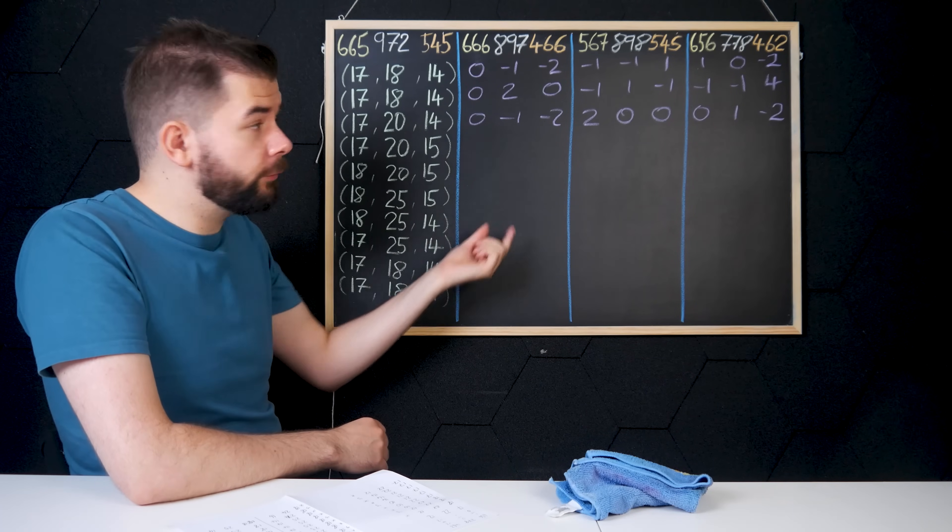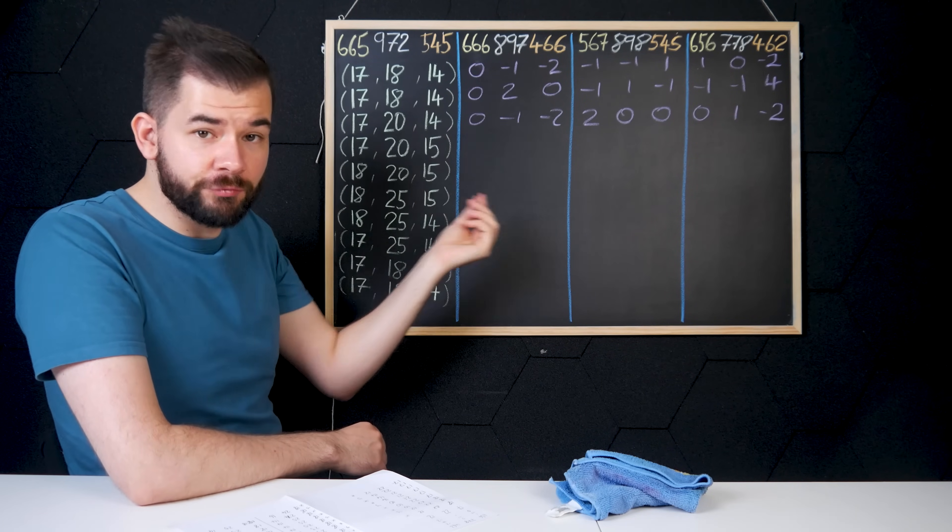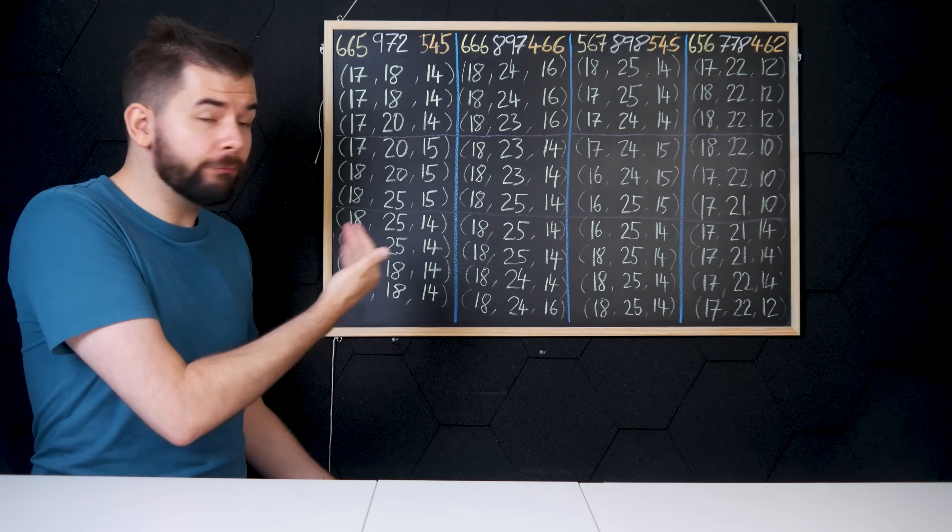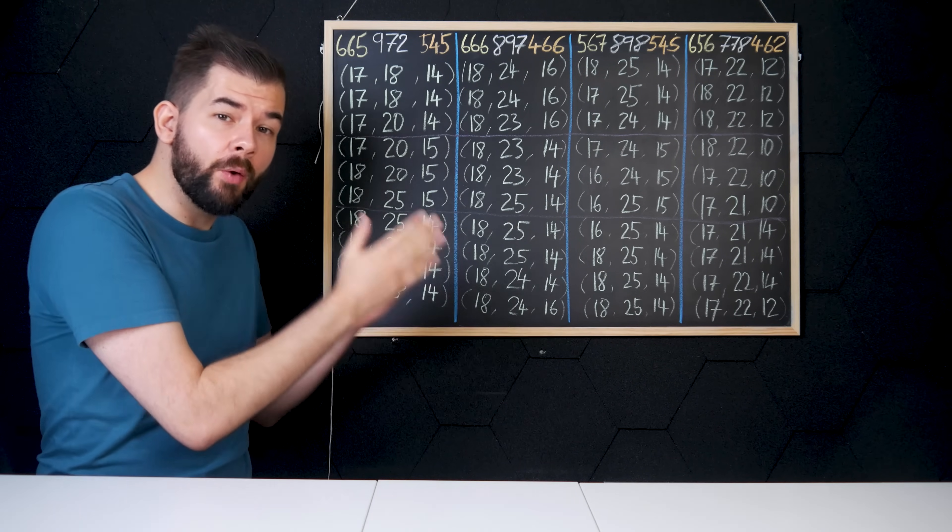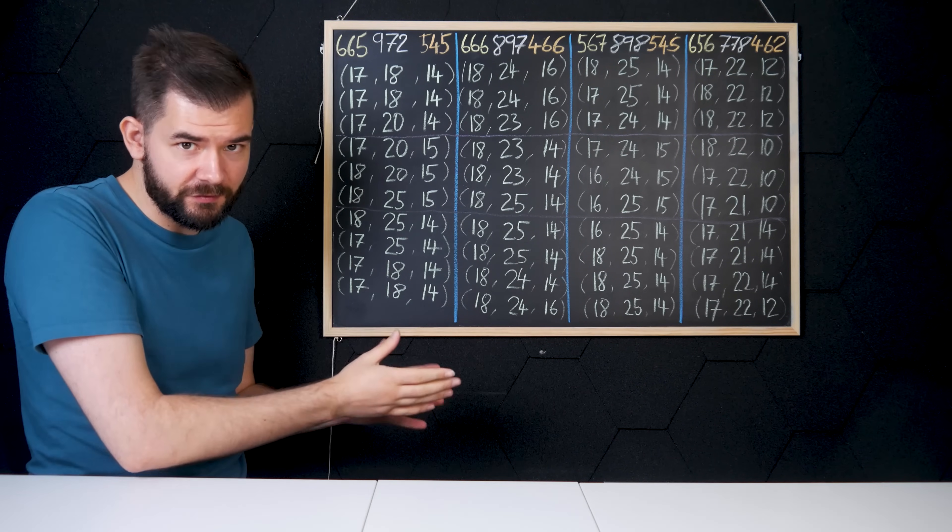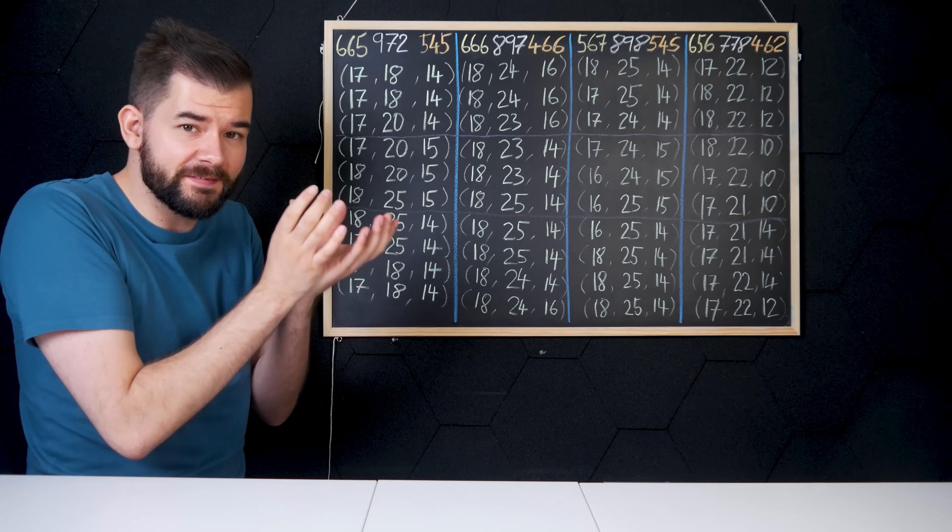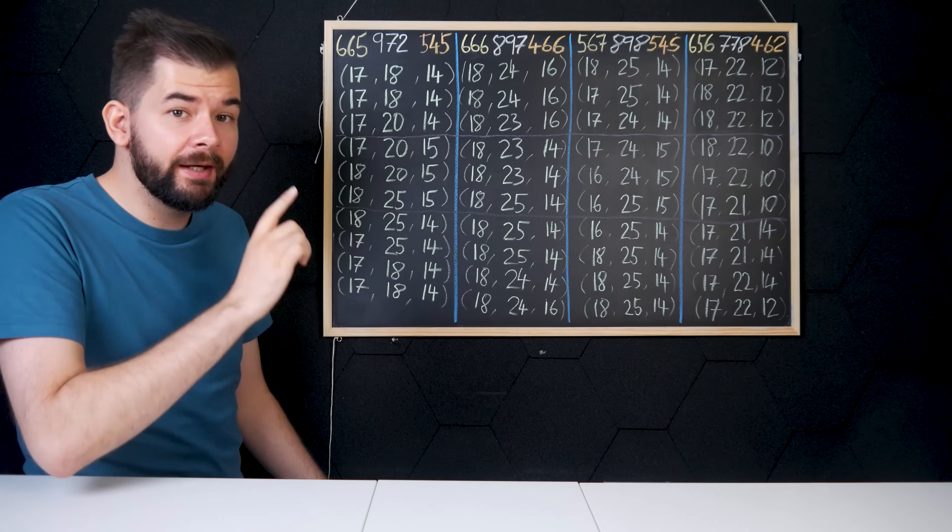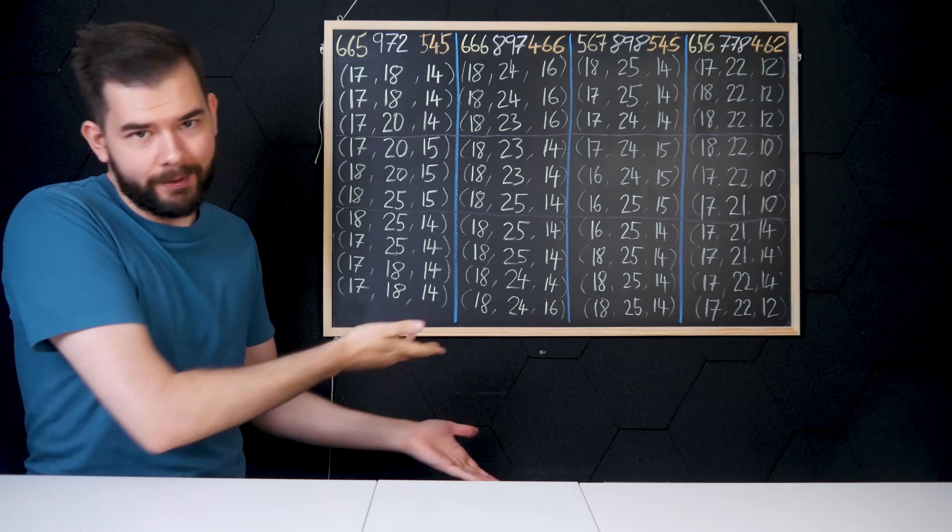And again, using the subtraction method, we can calculate how each coordinate of these rooms will change over the course of the film. Once we've calculated the positions of all the rooms, we can look across to see when these rooms will be adjacent, because to be adjacent means that two coordinates must be the same and one will differ by exactly one. And when we look, we realize this can't actually happen.